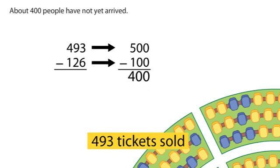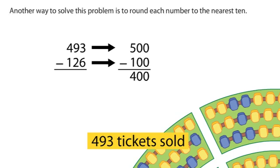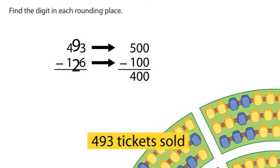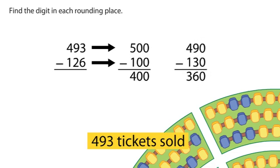About 400 people have not yet arrived. Another way to solve this problem is to round each number to the nearest 10. Find the digit in each rounding place.